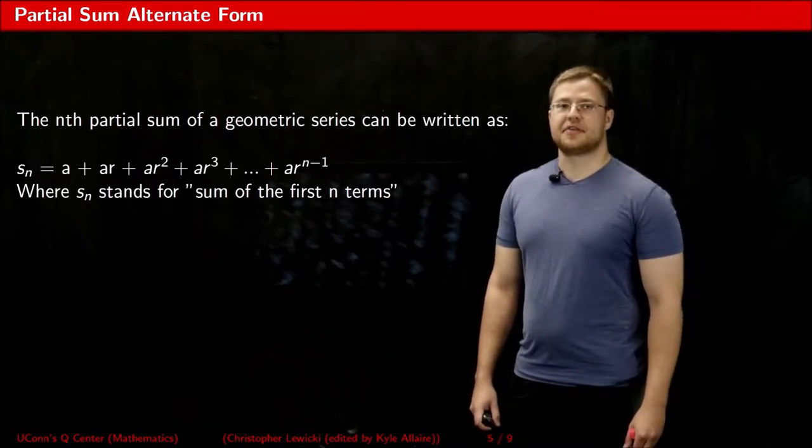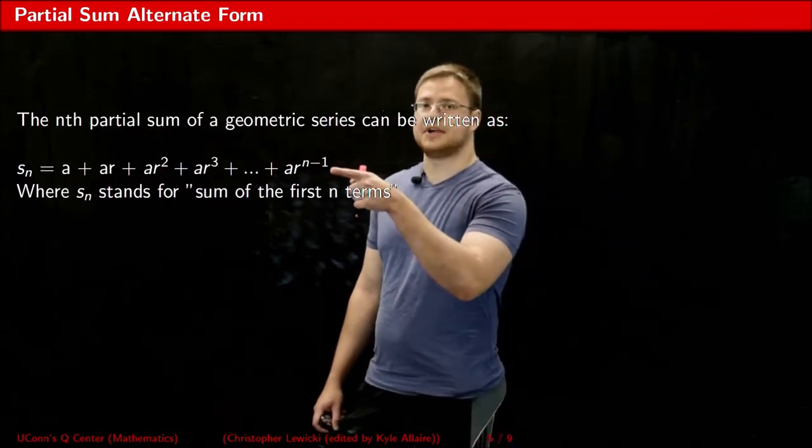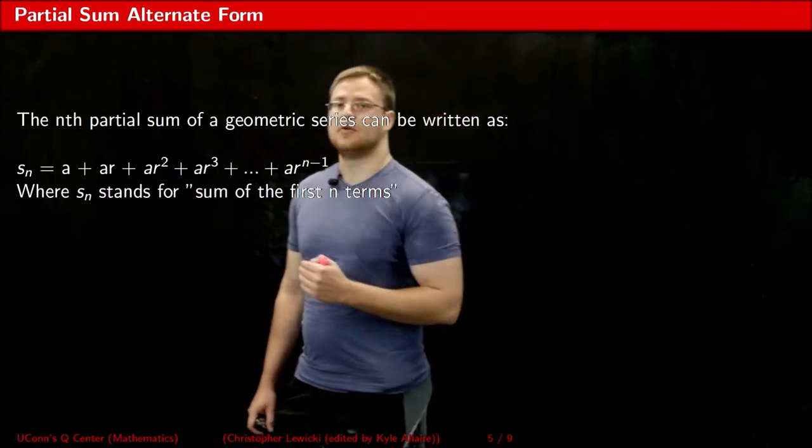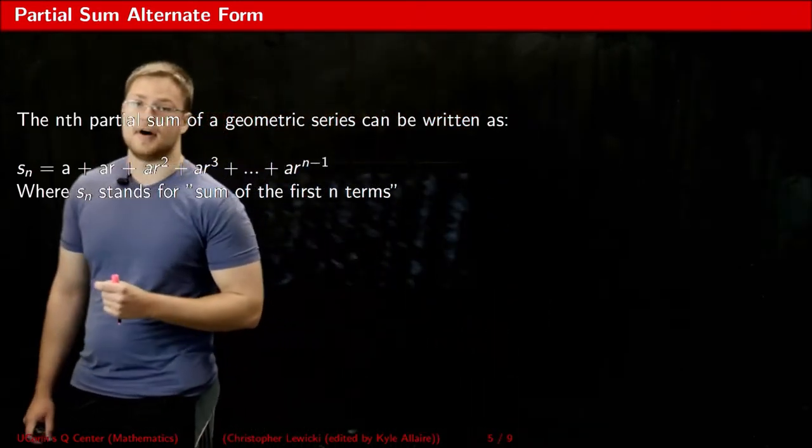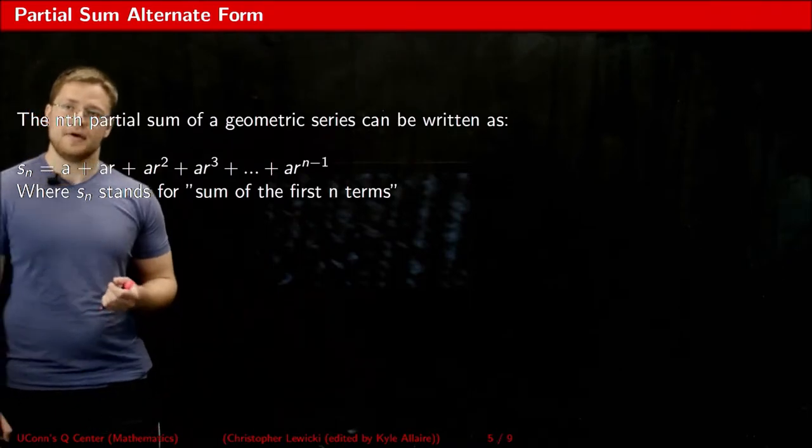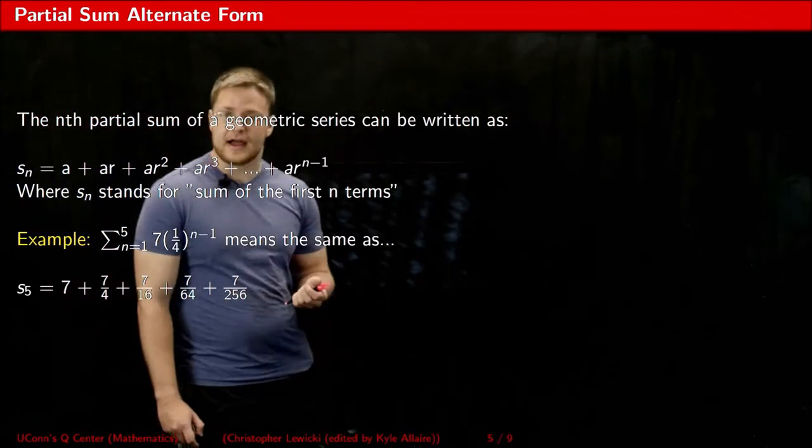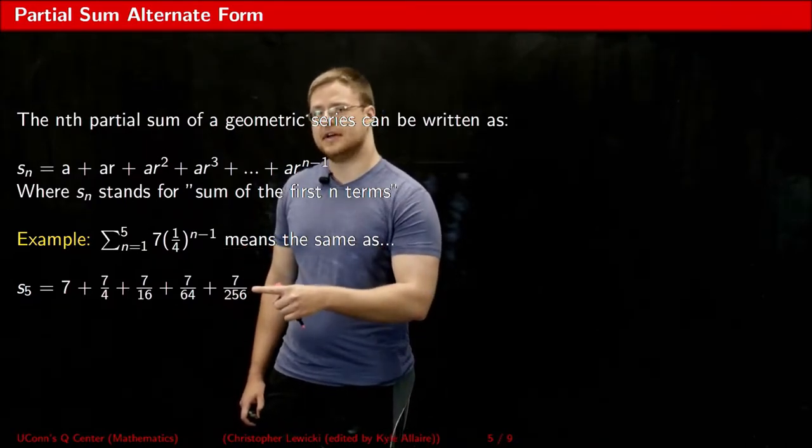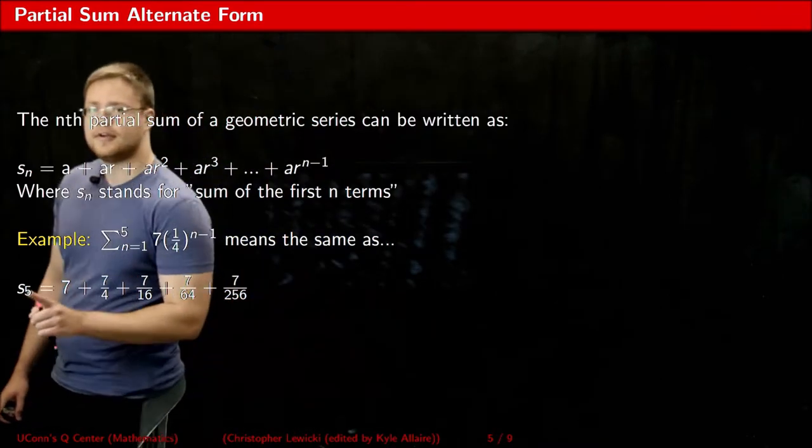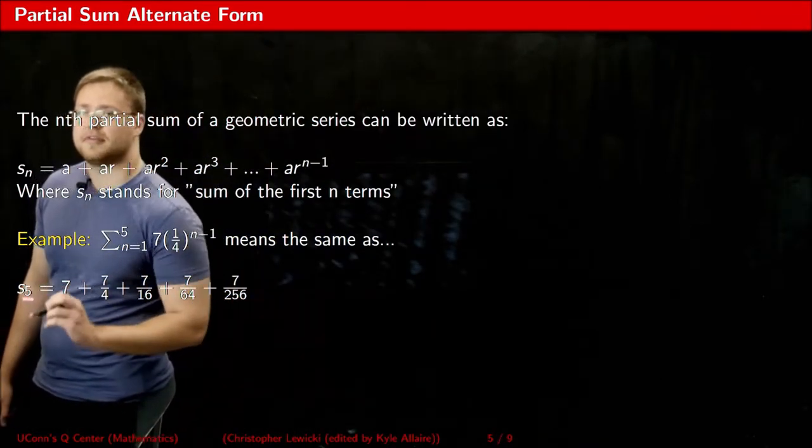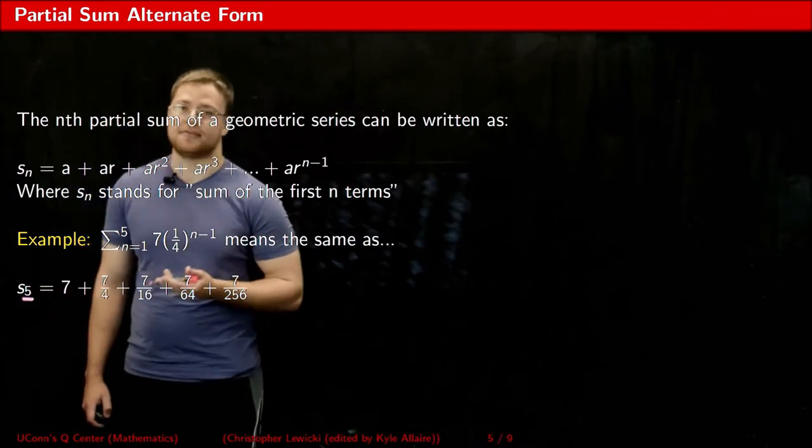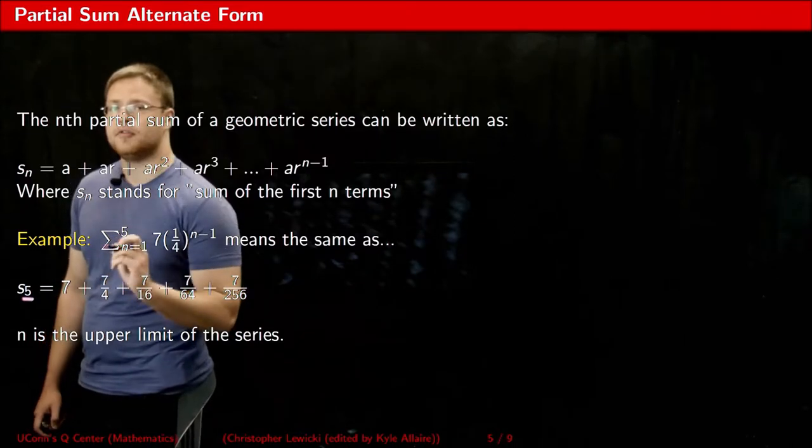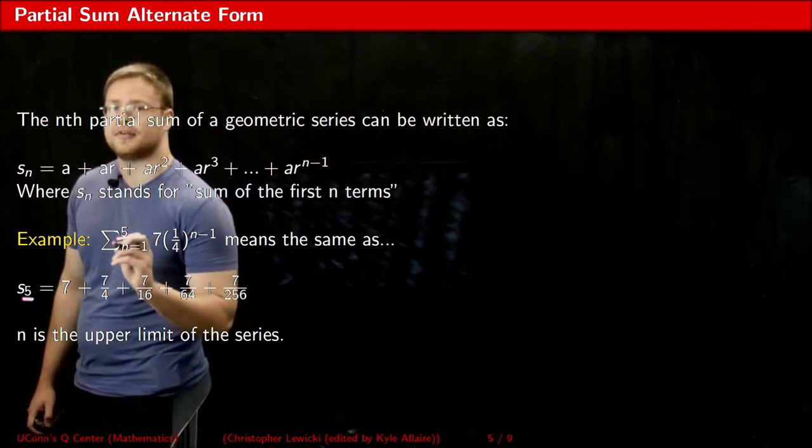The derivation of the partial sum formula requires understanding this equation. This equation can be used to represent any partial sum, where the SN stands for the sum of the first N terms. If you think about the partial sum that we did on the other slide, we could represent this partial sum with the equation and it'll look like this. Notice that the N value is five. This is because we're taking the sum of the first five terms of the series.